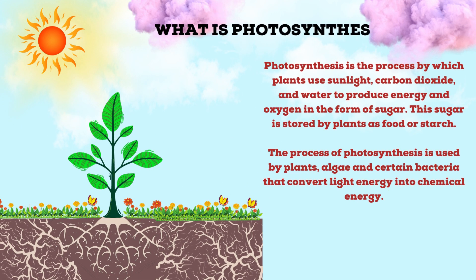Before getting into the process, let's check what is photosynthesis. Photosynthesis is the process by which plants use sunlight, carbon dioxide and water to produce energy and oxygen in the form of sugar. This process is used by plants, algae and certain bacteria that convert light energy into chemical energy.